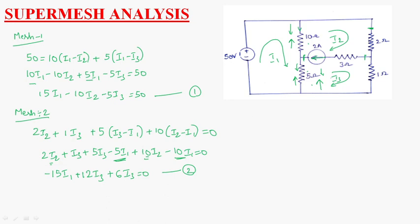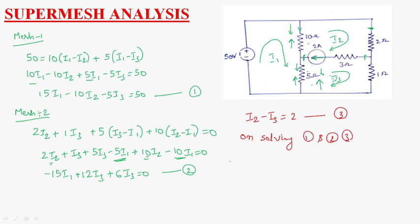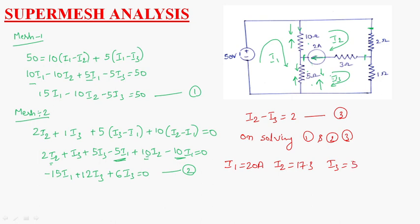The current source gives the constraint: I2 − I3 = 2 amperes. This is equation 3. Solving equations 1, 2, and 3 together, we get I1 = 20 amperes, I2 = 17.3 amperes, and I3 = 15.3 amperes. This is about super mesh analysis. Thank you.